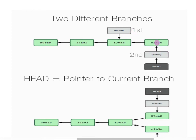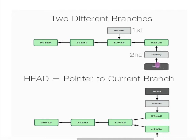The testing branch has been created from the master branch. So when we talk about the testing branch, it will have all the changes done in master as well as the extra changes done in that additional commit. Then we talked about HEAD — HEAD is a special pointer which points to your current branch.